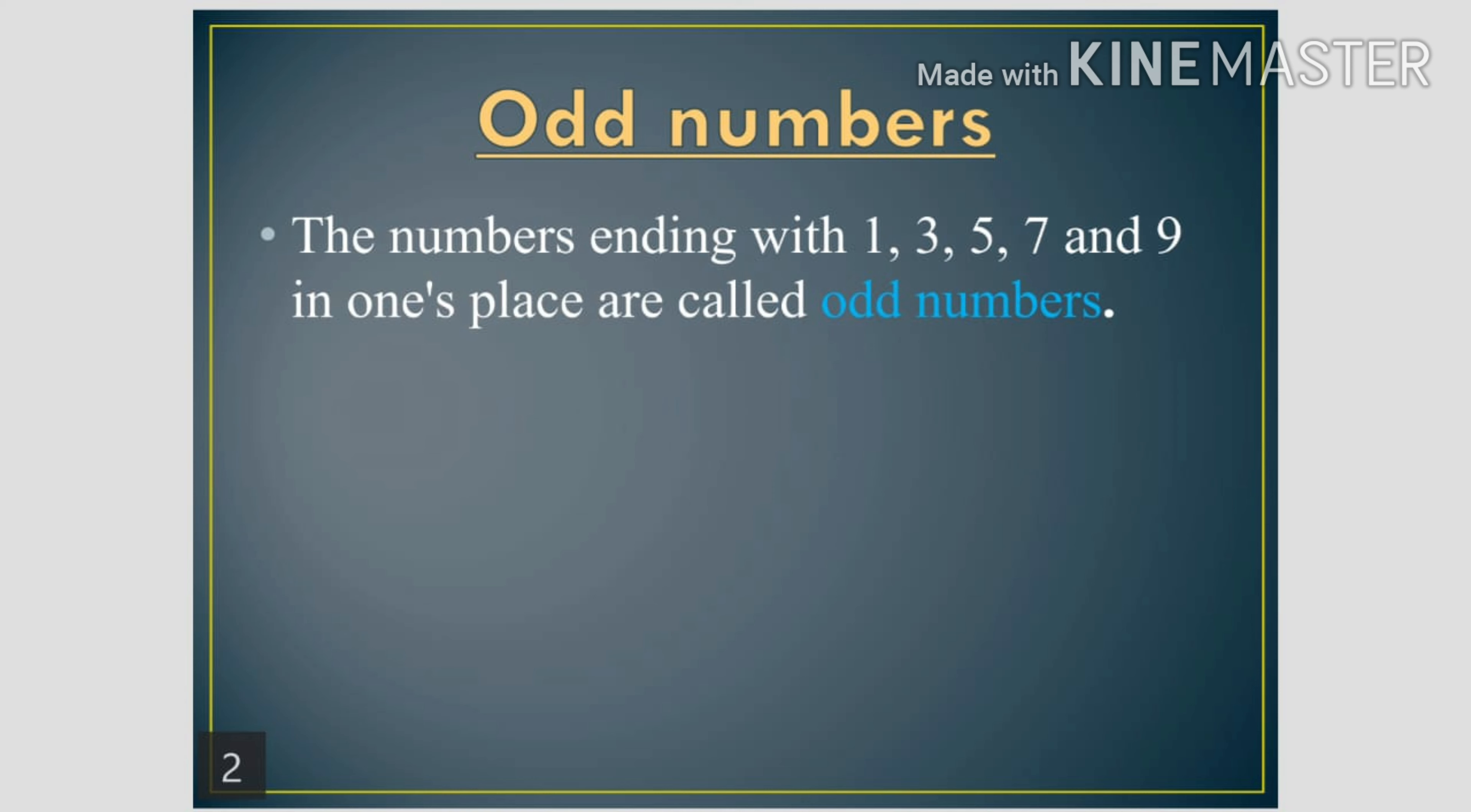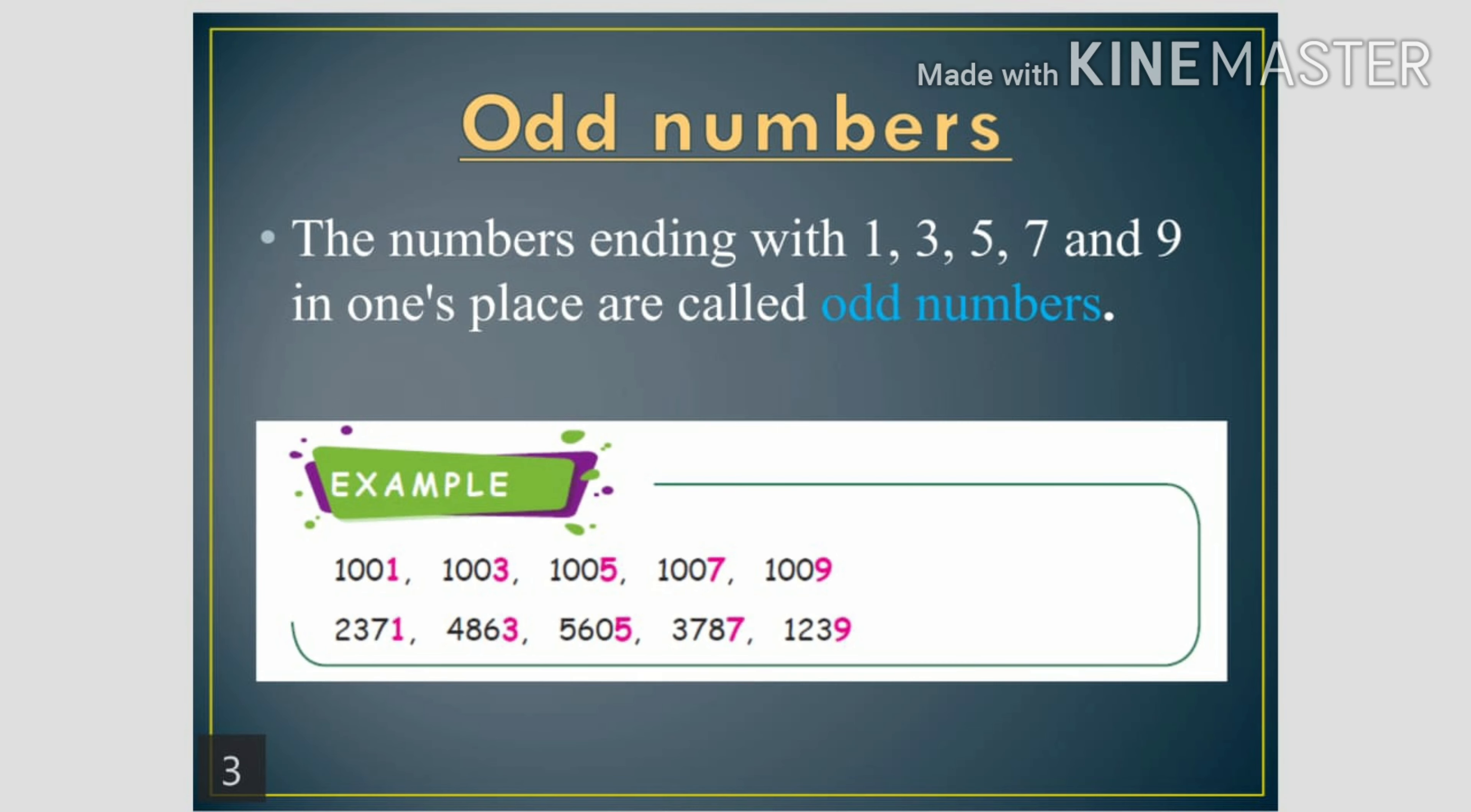3, 5, 7 or 9 are called odd numbers. By looking at the ones place we can tell that the given numbers are odd.